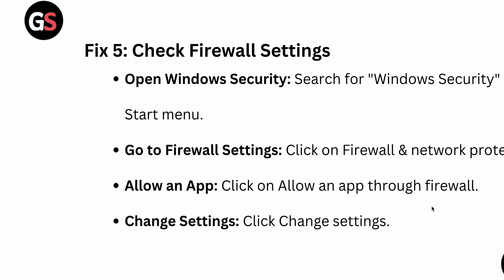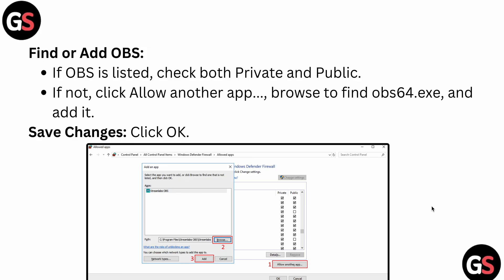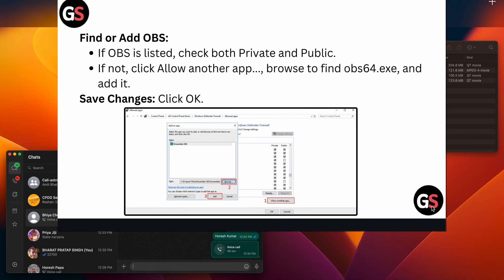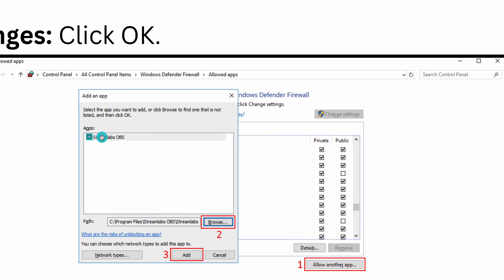You can also check the firewall settings. Open Windows Security by searching for it in the Start menu, go to Firewall and Network Protection, and click on Allow an App through the Firewall. Click Change Settings, then find or add OBS in the list. If OBS is not listed, click Add an App, select OBS, and click Add to allow it through the firewall.